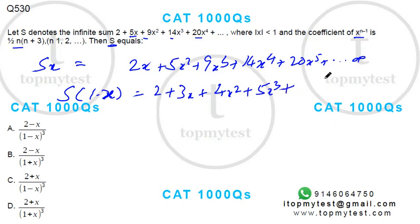20 minus 14 is 6x to the power 4 and so on to infinity. Let's do this again.